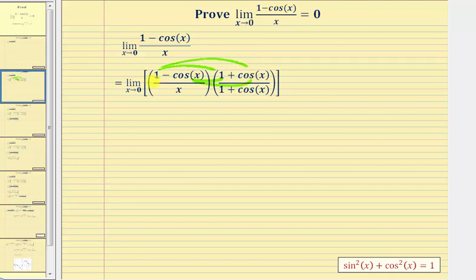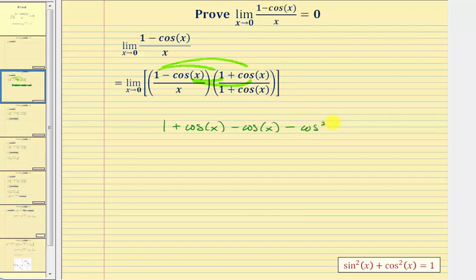One times one is one. One times cosine x, that'd be plus cosine x. Then we have negative cosine x times one, so minus cosine x. And finally negative cosine x times positive cosine x would be minus cosine squared x. Notice how these two middle terms are opposites, so those two terms simplify out, leaving us with a numerator of one minus cosine squared x.